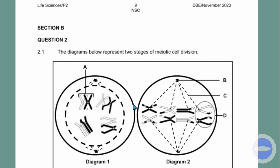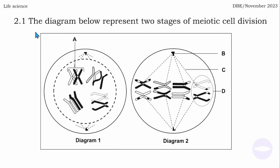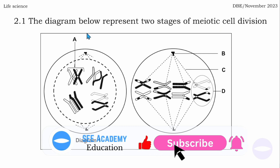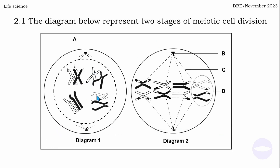So 2.1 - here are the questions. The diagram below represents two stages of meiotic cell division. We know that meiotic cell division is the process of meiosis. We have meiosis 1 and meiosis 2. This diagram shows only two stages. By looking at diagram 1, we see there are chromosomes - we have eight chromosomes - and we still have a nucleus that is disappearing. We also see we have centrioles on each side of the cell.